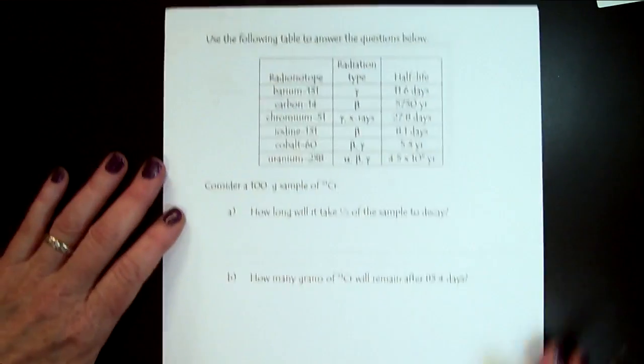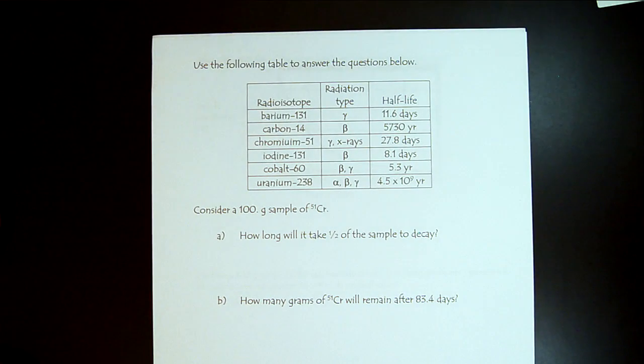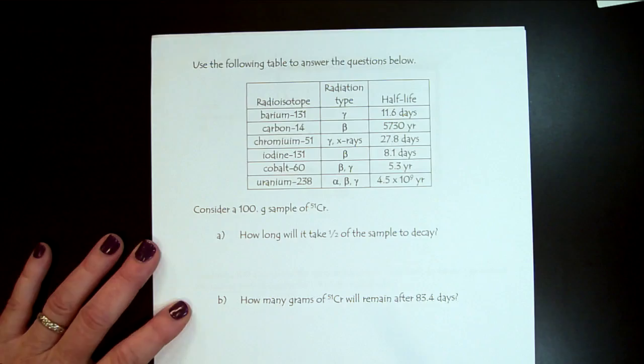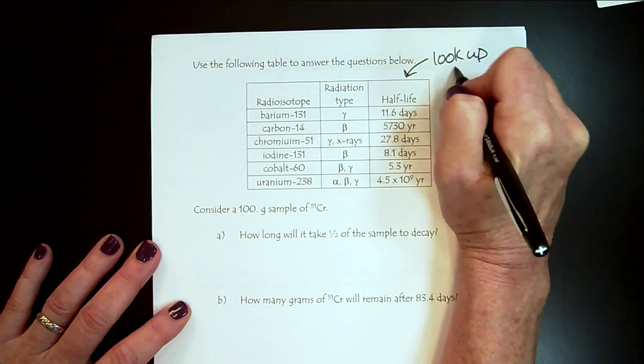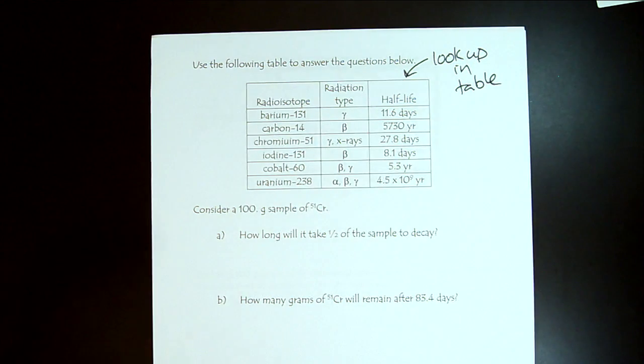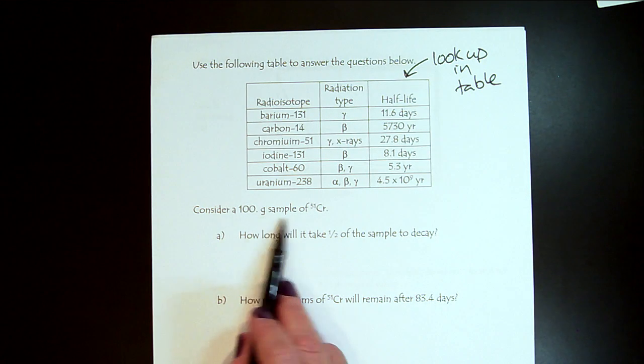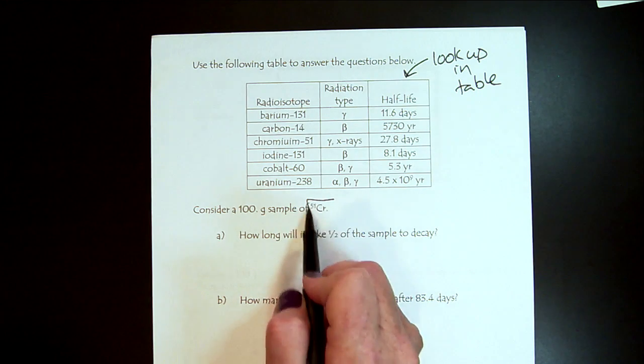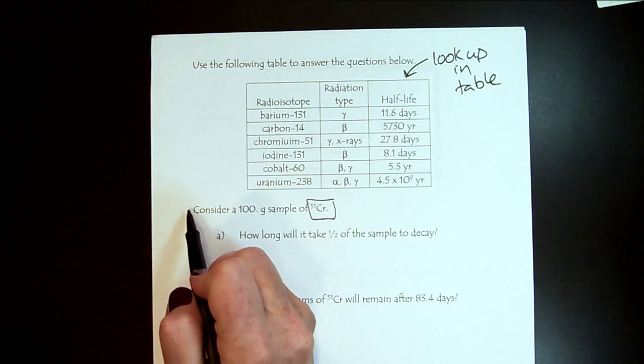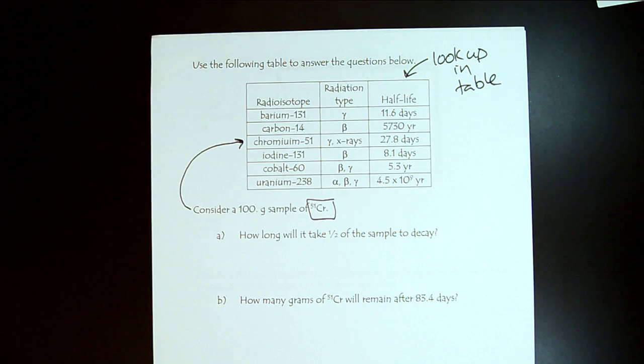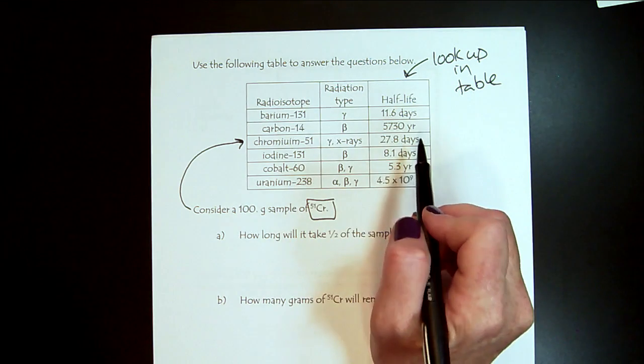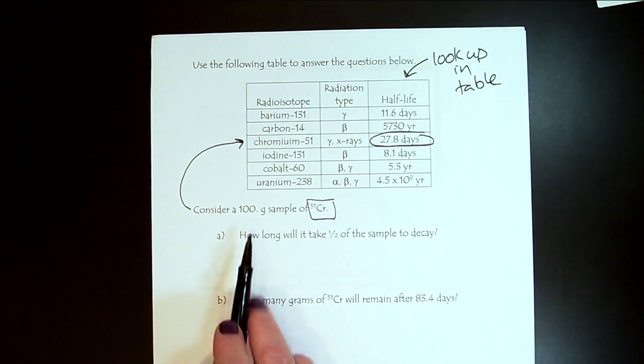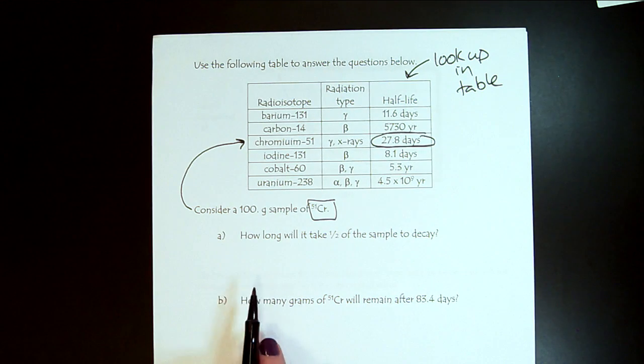Now, it's important to understand that we don't memorize half-lives. So we're always going to look these up in a table. I never expect you to memorize half-lives. It's something we would look up. And so with this first one, we have a sample of chromium-51. So the first thing we want to do when we're working with a radionuclide, we would want to find the half-life. So it's right here. We started with a 100-gram sample.